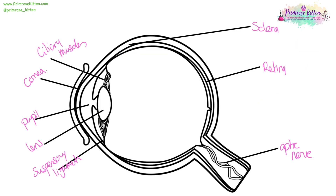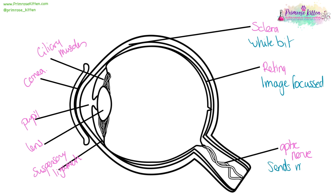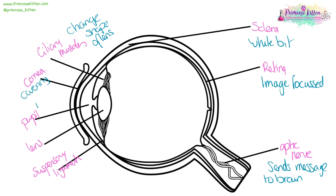Here we have our picture of the eye. The sclera, which is the white bit. The retina, which is where the image is focused. The optic nerve, which sends messages to the brain. The ciliary muscles, which change the shape of the lens. The cornea, which is a protective covering. The pupil lets light in. The lens is responsible for focus. And the suspensory ligaments hold the lens in place.